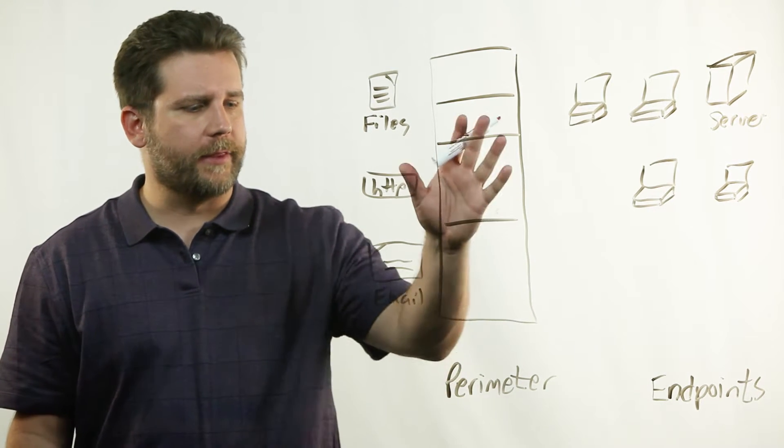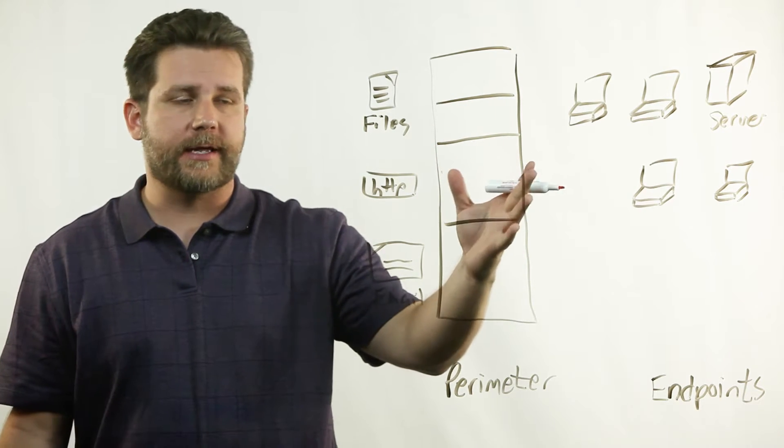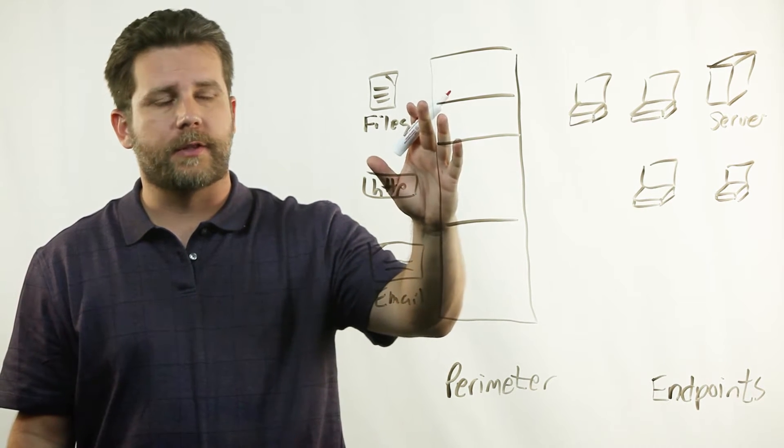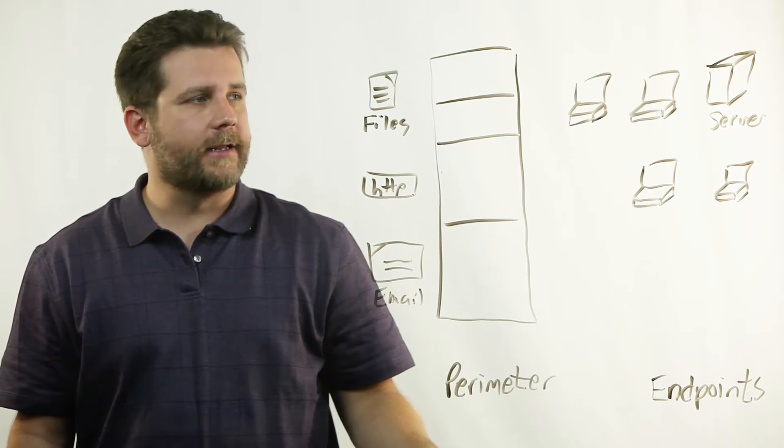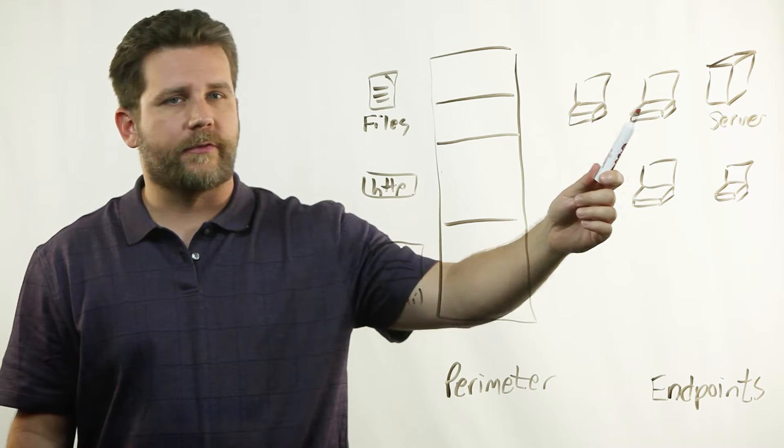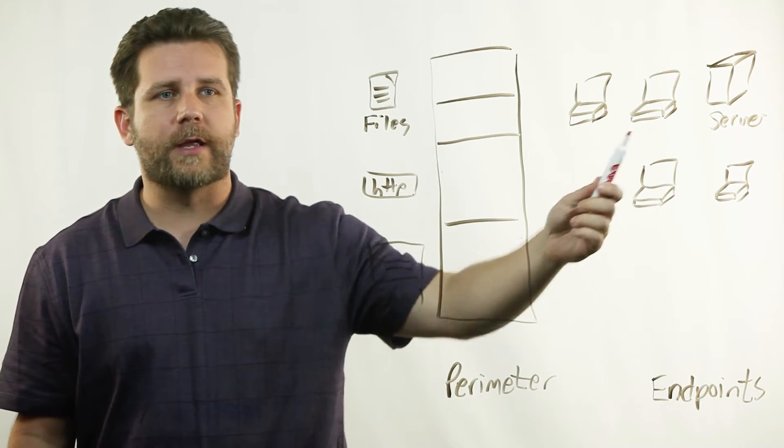So first I want to talk about the perimeter, which essentially is at the edge of your network that keeps malicious files and web traffic and emails from getting in. And I want to talk about prevention and detection, not just at the perimeter, but also on your actual endpoints themselves.